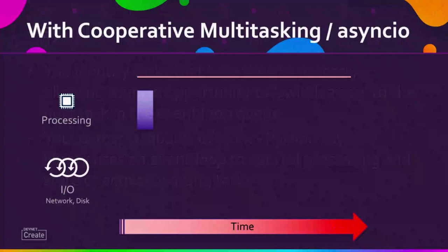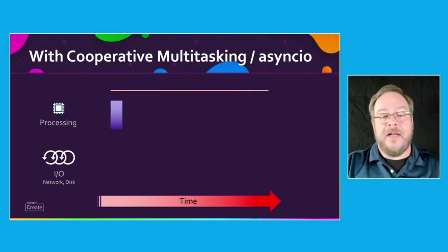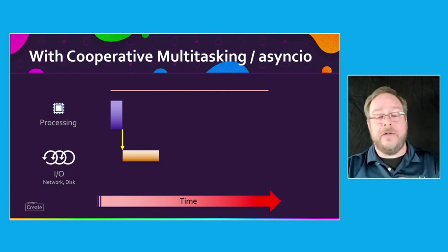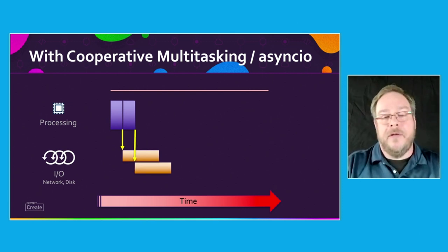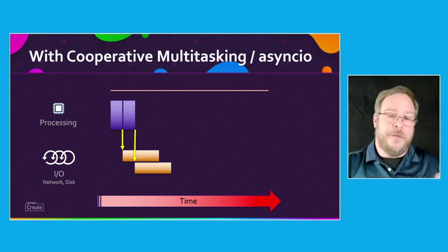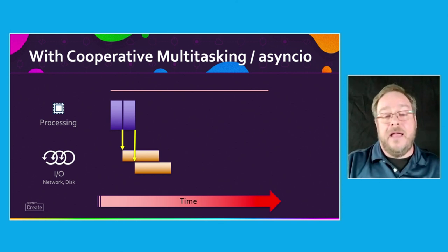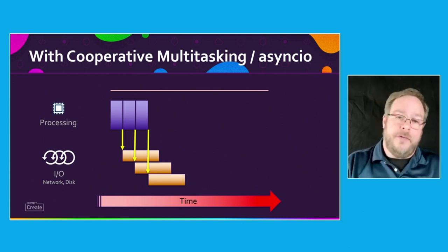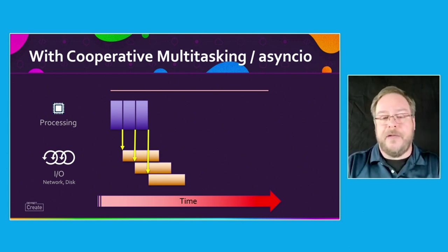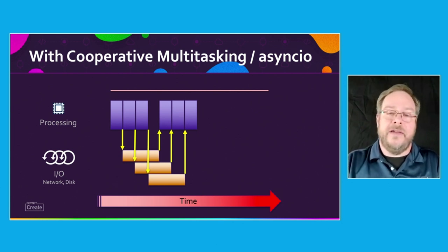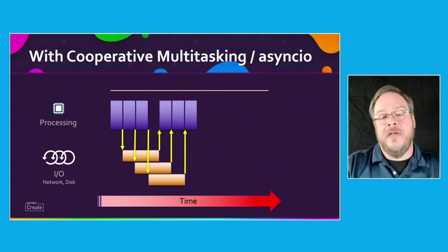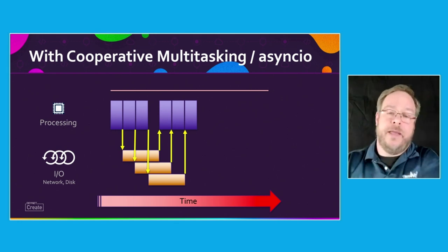With cooperative multitasking, here's how AsyncIO would do it: we start a task and send an API call out. We know we have to wait for that API call to finish, so we go ahead and send out another request because the server we're dealing with can handle more requests than our single-threaded endpoint can do. We switch to another task. At some point we start getting responses back from the API server, so we can complete the processing more and more. Overall, the runtime is shorter because we're swapping in and out processes as we're waiting for completion from another dependent system.